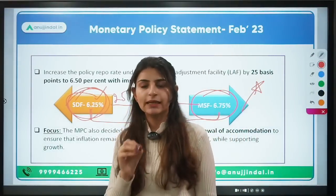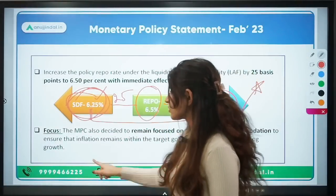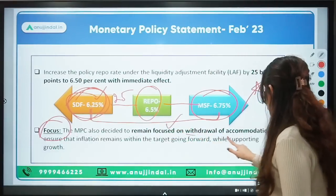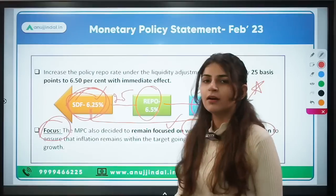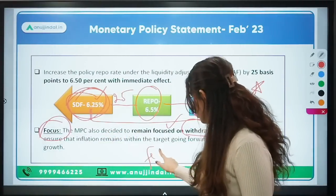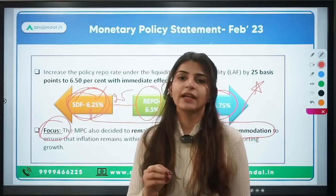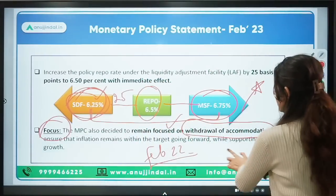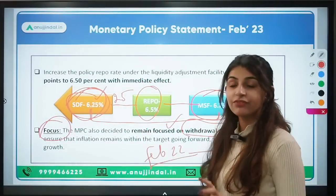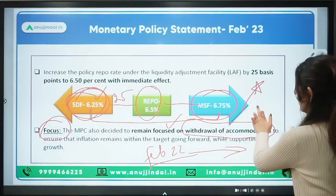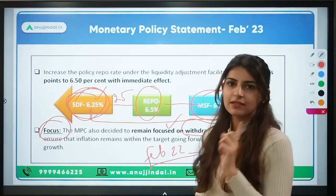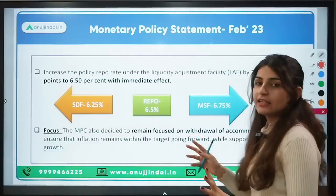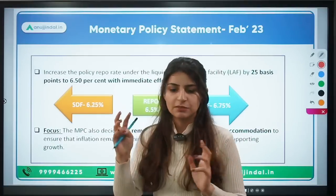This monetary policy meeting focused on calibrated withdrawal — the stance remained on withdrawal of accommodation. Up until early 2022, the focus was on an accommodative stance — reducing rates and injecting liquidity. But after inflation rose in the economy, the RBI has maintained a withdrawal stance for the past five to six meetings. For the sixth consecutive time, the RBI increased the repo rate, this time by 25 basis points, primarily because inflation had exceeded the 2%–6% tolerance band.